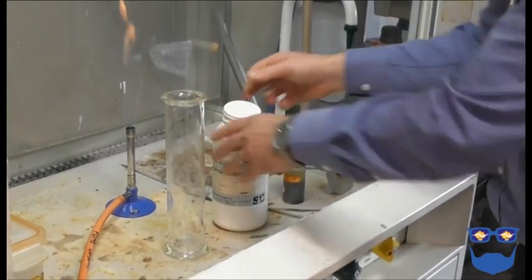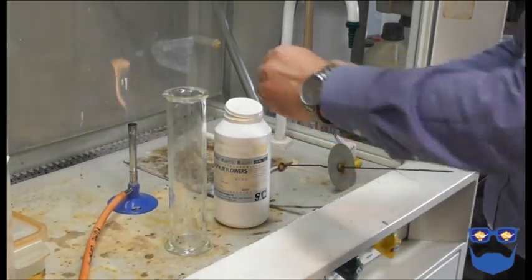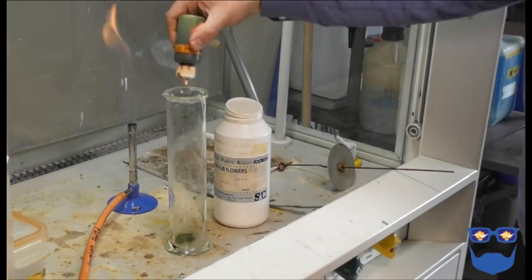Pour about three to five milliliters of universal indicator solution into the gas jar. You want the students to see the green color clearly.